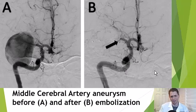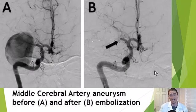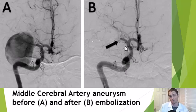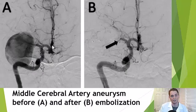Now we'll shift to catheter angiography, a more sophisticated technique for looking at the blood vessels. A doctor introduces a needle into the artery of the thigh and threads a catheter all the way up into the cerebral blood vessels, then injects dye and takes pictures with fluoroscopy. This creates real-time three-dimensional images where the dye scrolls through the arteries, making pathology easy to see. You can see the internal carotid artery forming the middle cerebral artery, the anterior cerebral arteries, and a massive middle cerebral artery aneurysm.